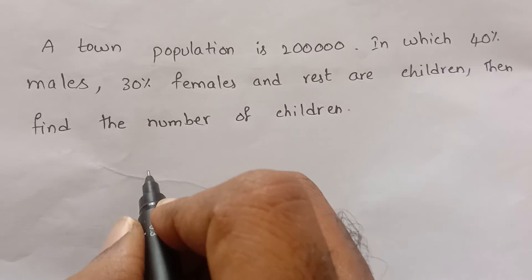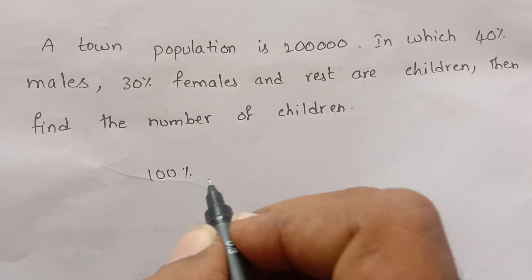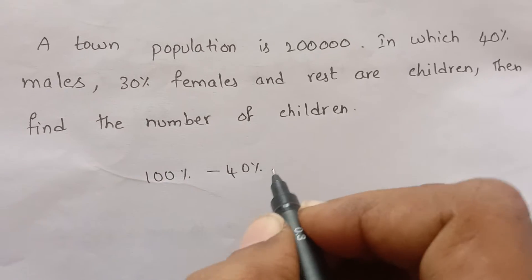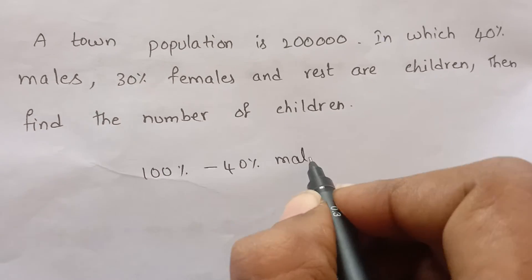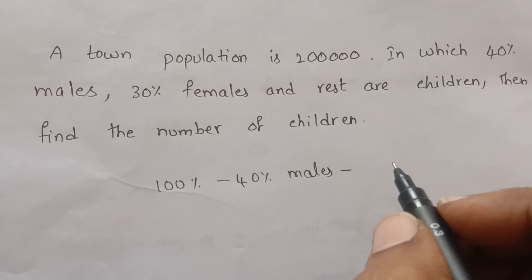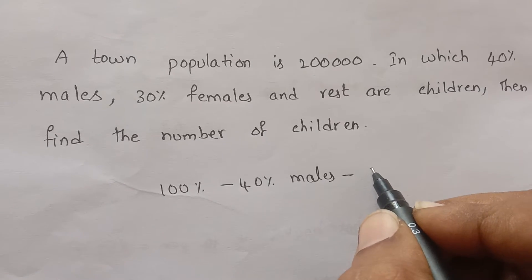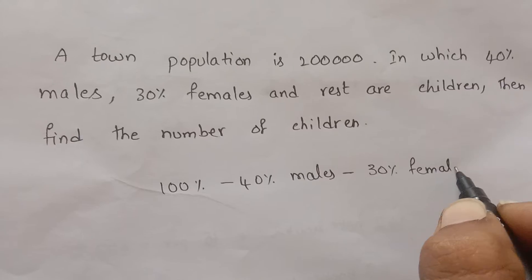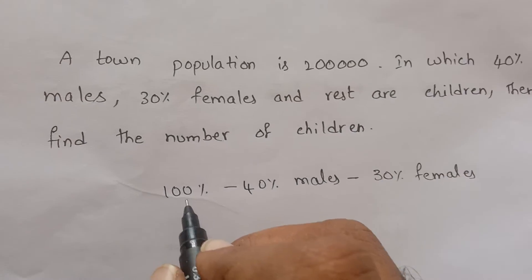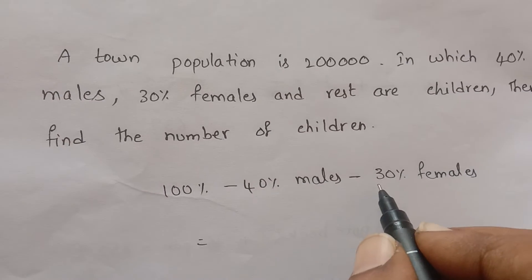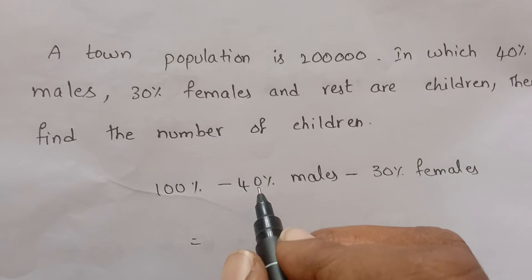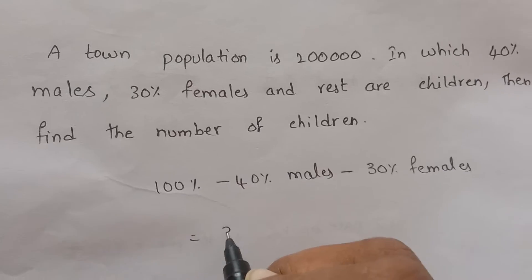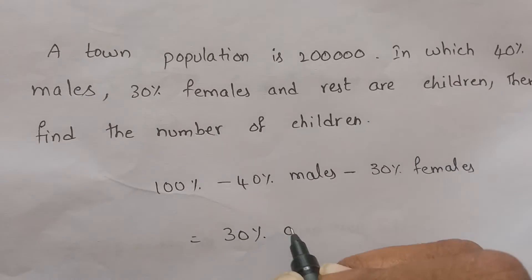We take the total as 100% population. In that, 40% are males, 30% are females, and the rest are children. So in 100%, what is the rest? 40% are male, 30% are female, and the rest — 30% — are children.